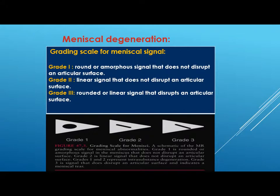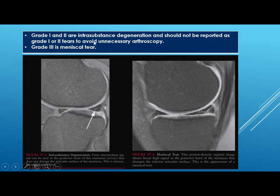We have grading for meniscal signal. Grade one is round or amorphous signal within the meniscus that does not reach the articular surface. Grade two is a linear signal that does not disrupt the articular surface. Grade three is round or linear signal disrupting the articular surface. Grade one and two are intrasubstance degeneration — report as degeneration and avoid using the term tear to avoid unnecessary arthroscopy. Grade three is meniscal tear.